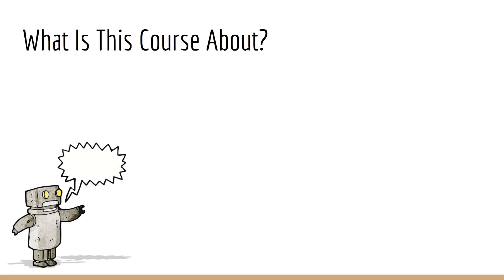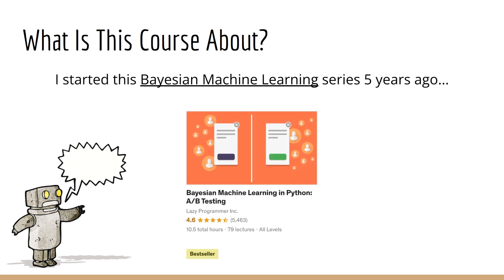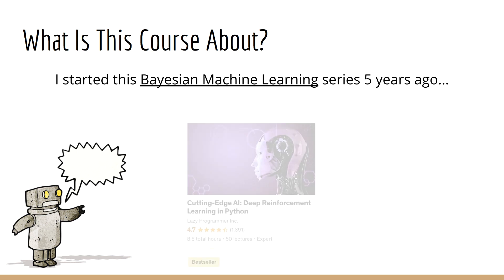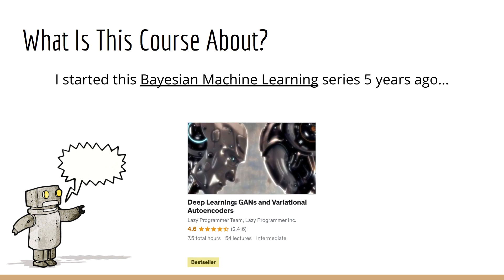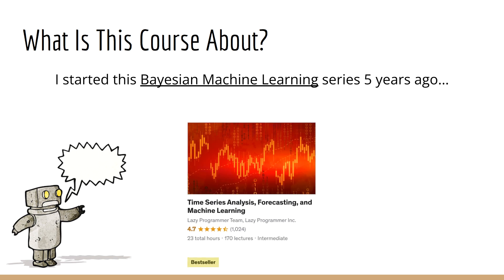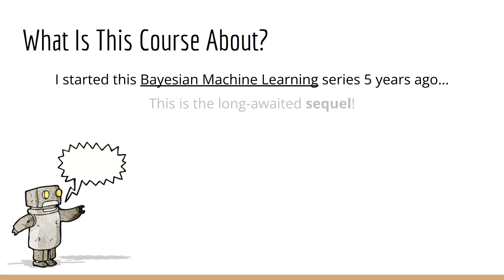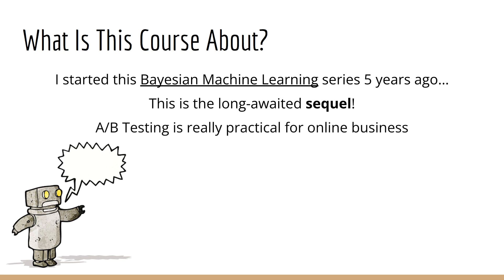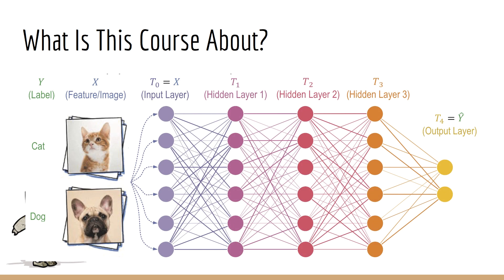I started this series on Bayesian machine learning over five years ago. I'll be honest — I did get a little sidetracked making courses on deep learning, reinforcement learning, GANs, PyTorch, TensorFlow, finance, time series, and so forth. But better late than never, and here we are at the sequel. That prior course covered A/B testing, which is really practical and easy to apply if you run any kind of online business, but it did not cover any models that we typically think of as machine learning — models that accept a feature vector as input and learn in a supervised manner from corresponding targets.